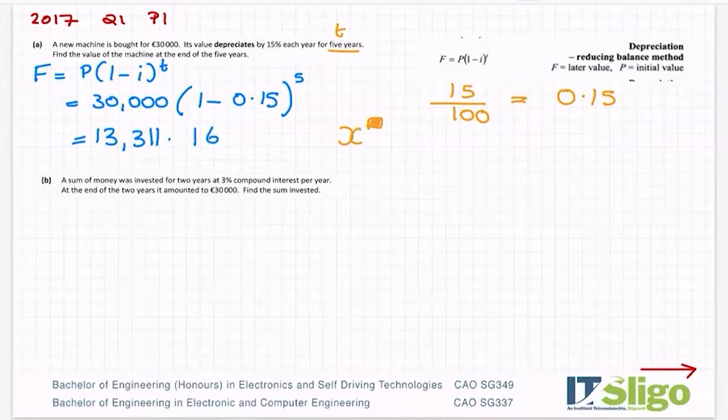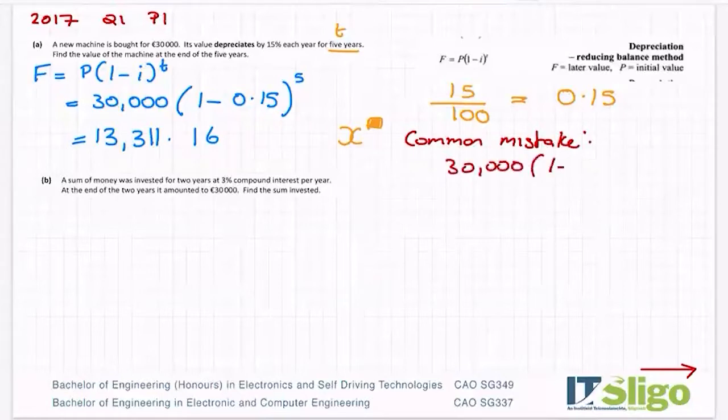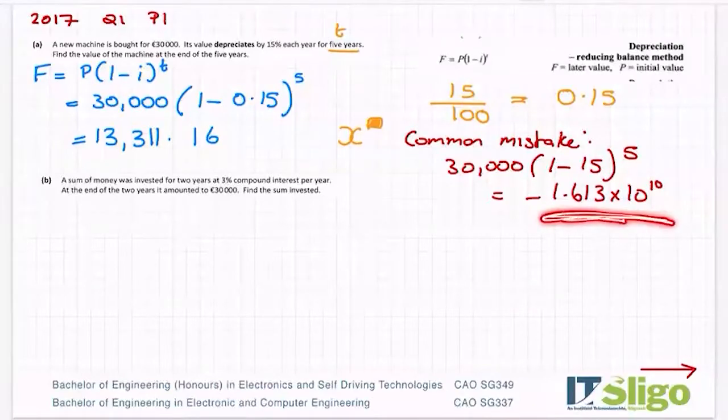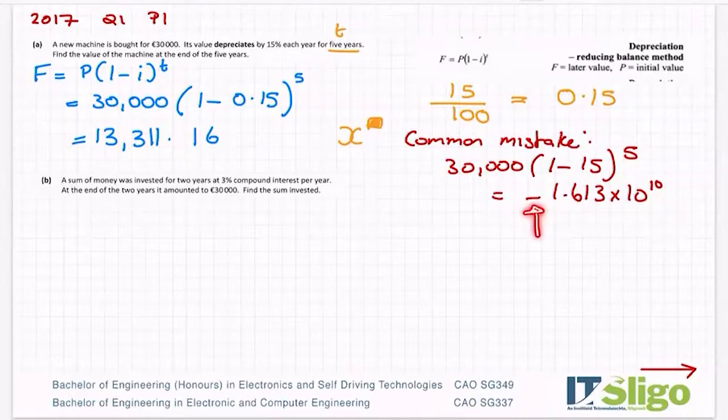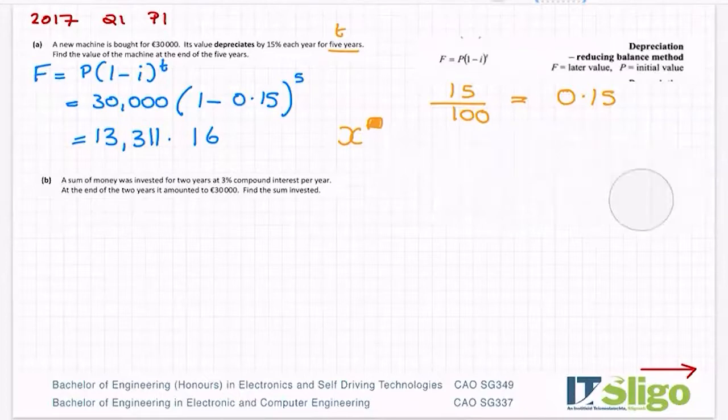Now a common mistake people make is you forget to convert the percentage to a decimal and you do one minus 15 to the power of five. When you put that into your calculator you get this mad answer, minus 1.613 by 10 to the 10. It doesn't even look like a real number and it's a minus, so it's very hard for something to have a negative value. So that's when you know you've forgotten to change your interest rate to a decimal. Look out for mad numbers like that because that's very easy to do to forget. That was part A and that was worth 10 marks out of this 25 marker question.